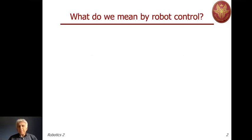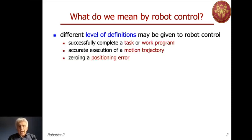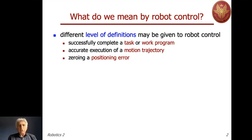The first thing I would like to talk about is what we mean by robot control. Posing this question to different people in robotics — from industry, research, or academia — may get different answers. There are a number of different definitions or levels of definition that can be given to the term robot control. We are controlling a robot successfully if we are able to complete a given task or work program, but for doing this we have to solve intermediate subtasks typically involving motion. At a lower level of definition, controlling a robot means executing accurately a desired motion trajectory, whether defined in Cartesian space or joint space.